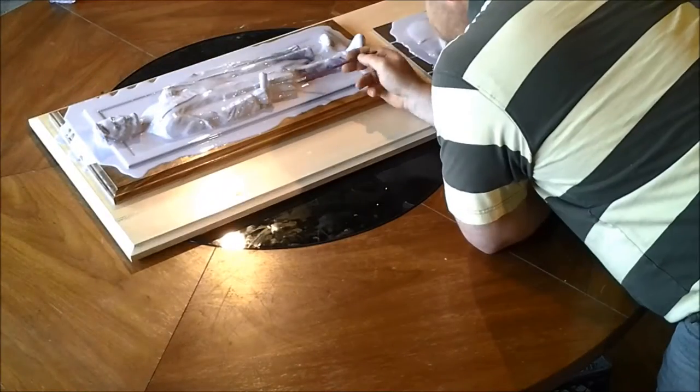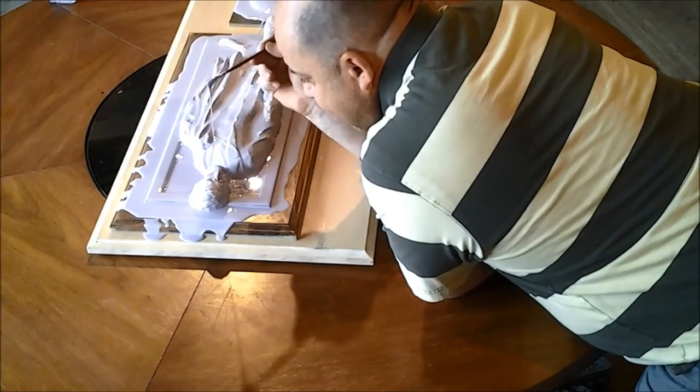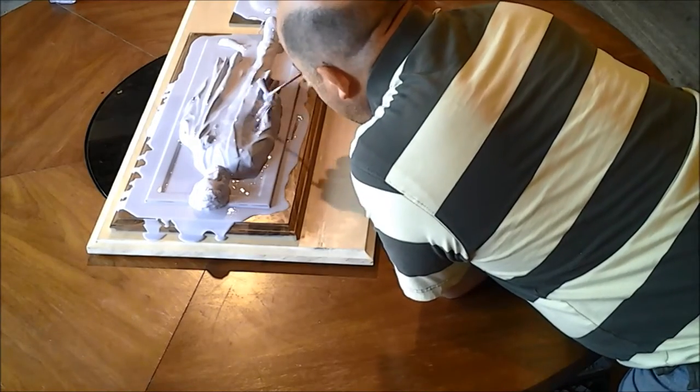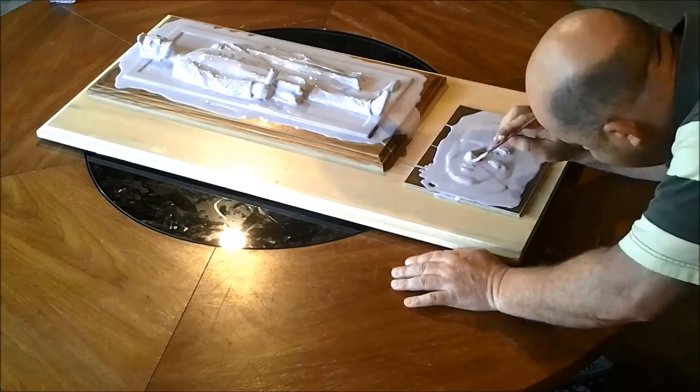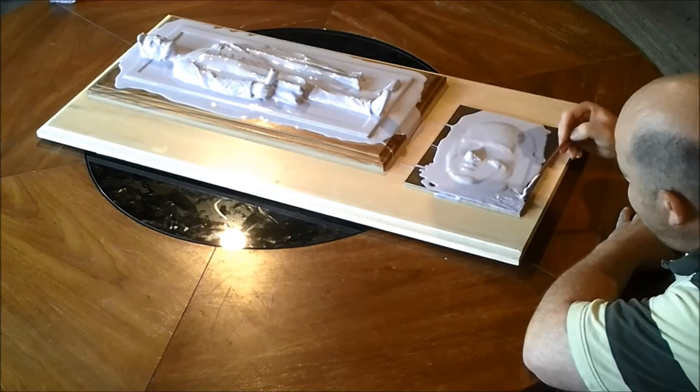So as I work along the piece I just move bit by bit and this is the reason why I use this catalyst that has the slower cure time. Because it gives me plenty of time to get in there and get those details in before the rubber starts to firm up.